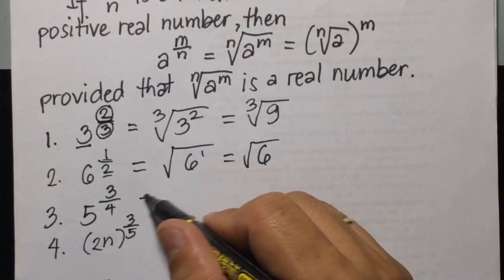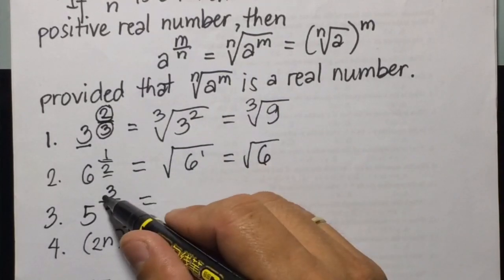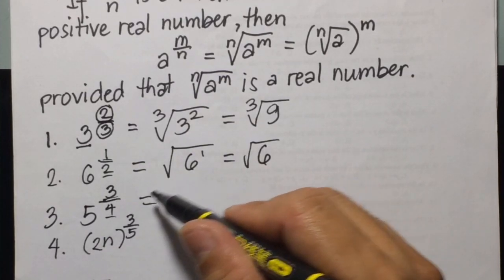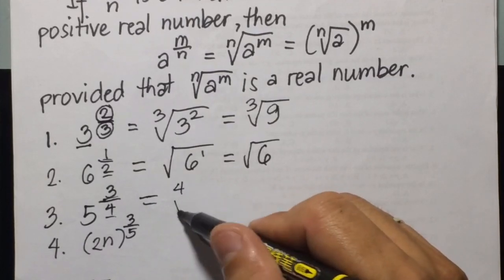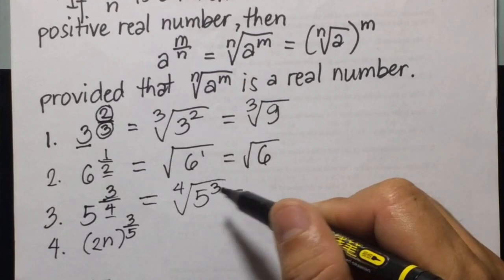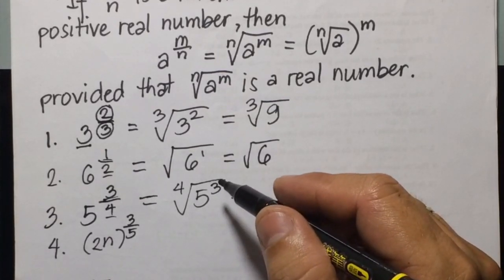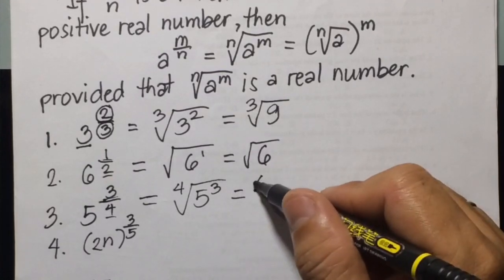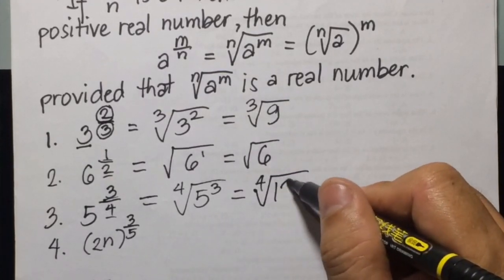Then number 3: 5 raised to the power of 3 fourths. Here 3 is the exponent and 4 is the index, so this is equal to the 4th root of 5 cubed. Since 5 cubed is 5 times 5 times 5 — that is 25 times 5 — we get the 4th root of 125.